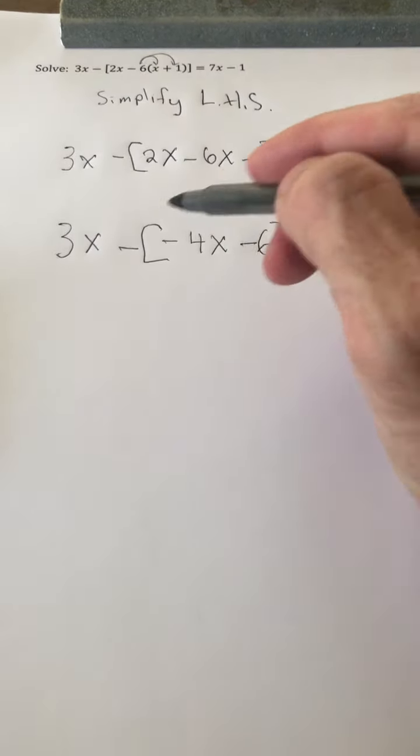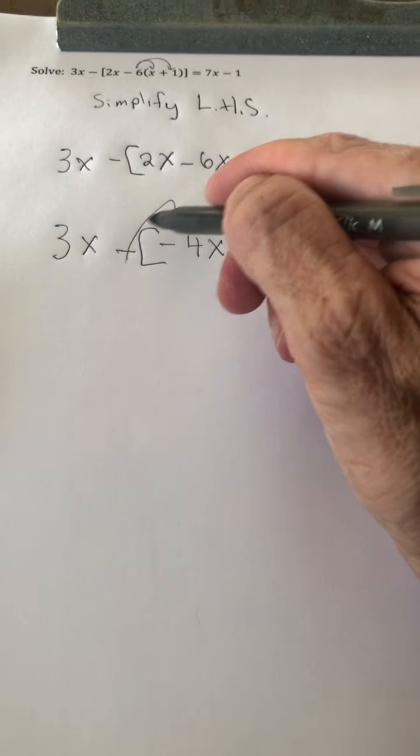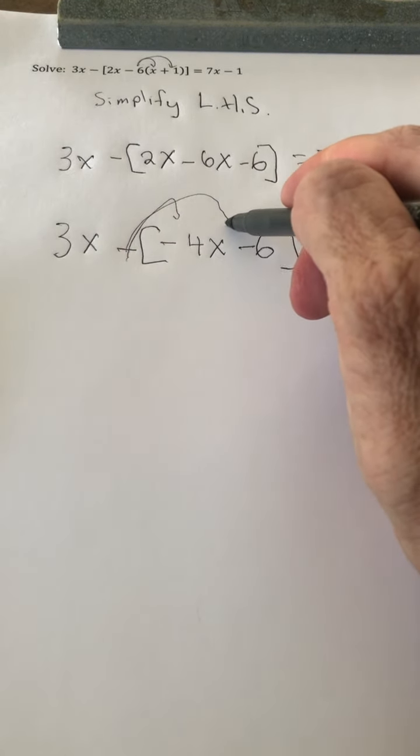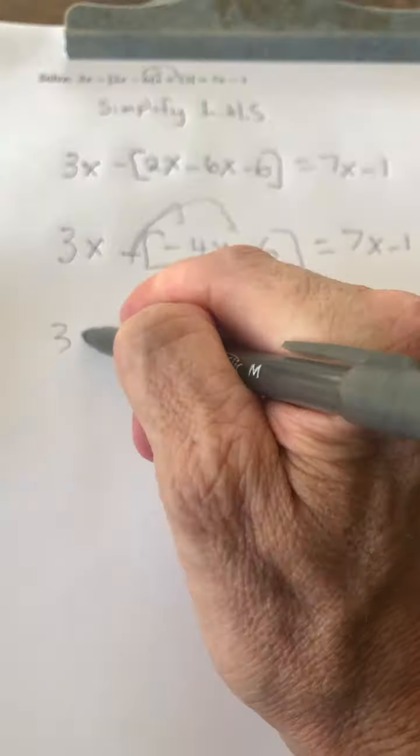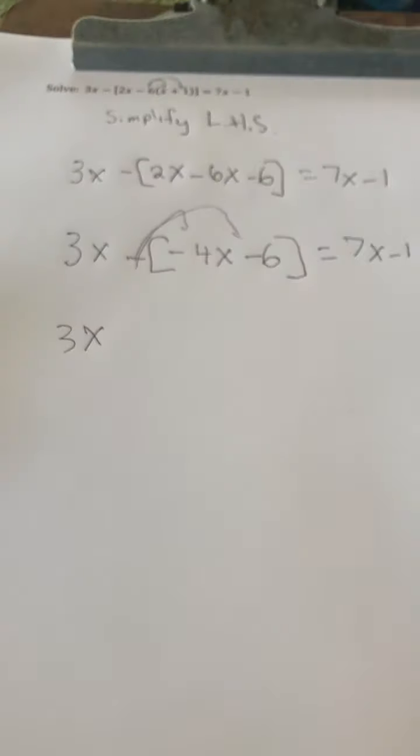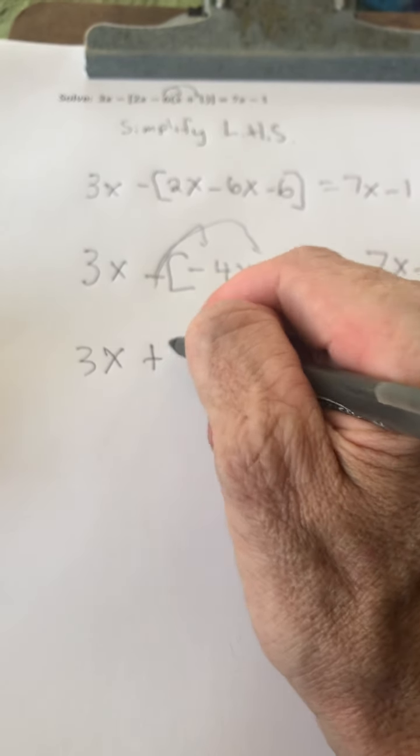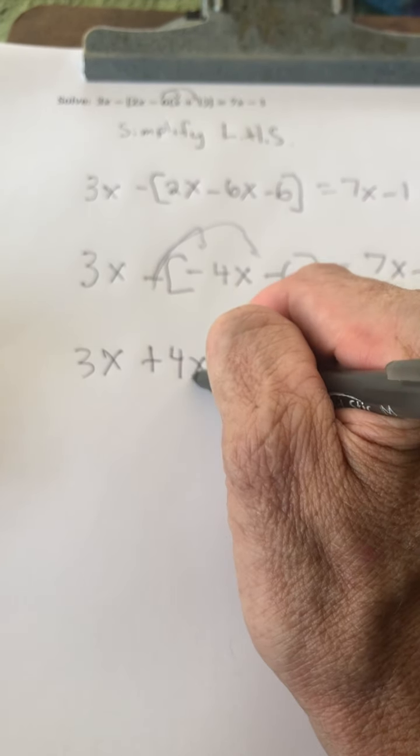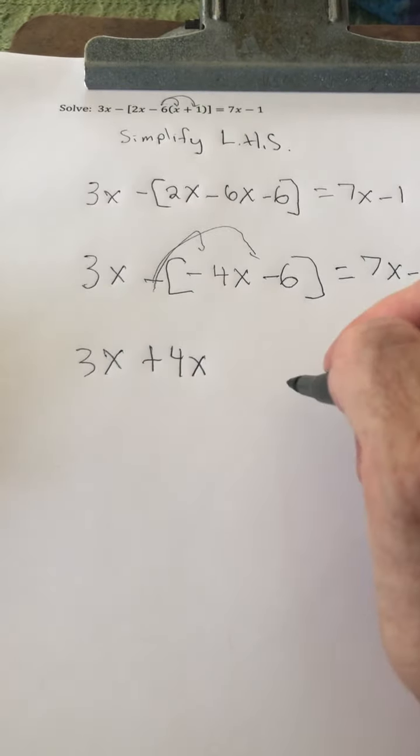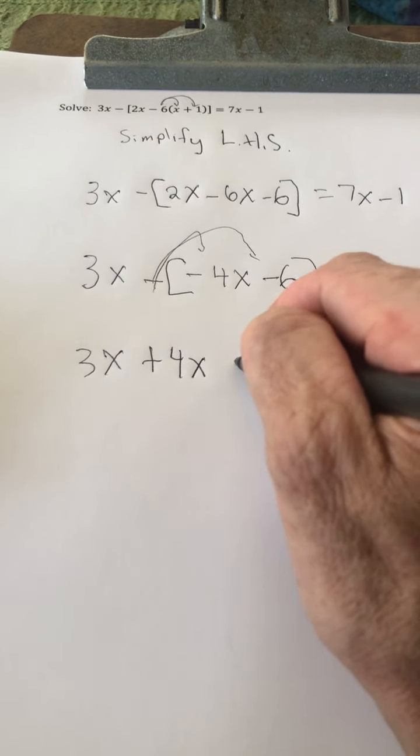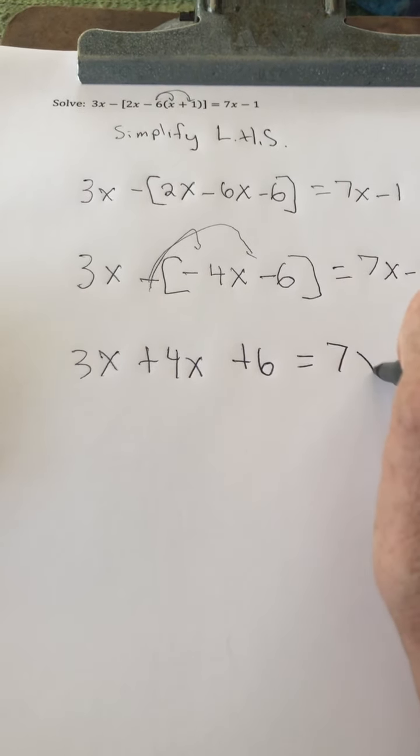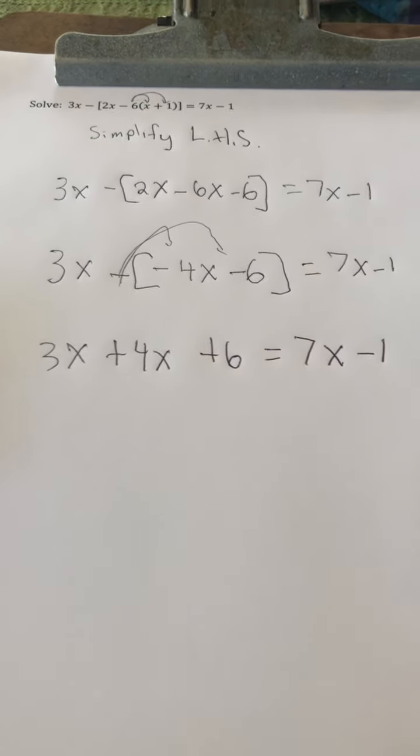So now I distribute the negative 1. So we have 3x plus 4x plus 6 equals 7x minus 1.